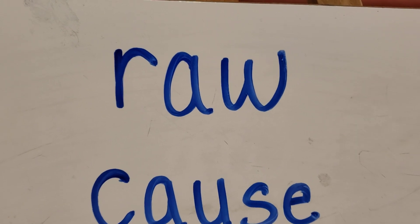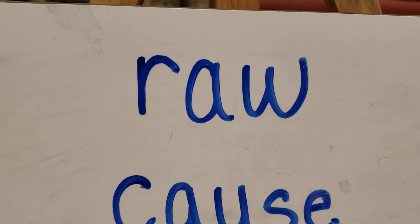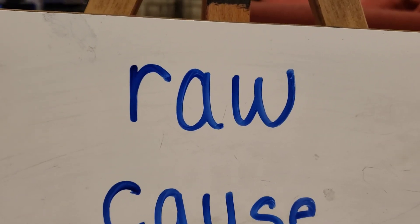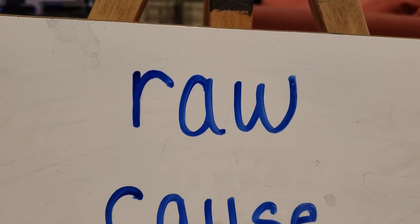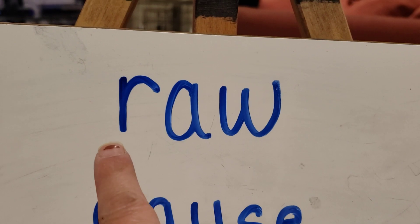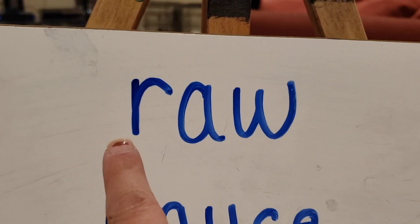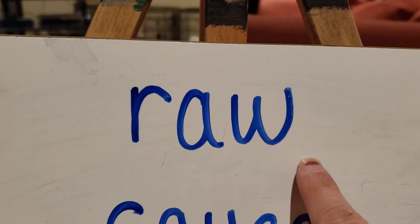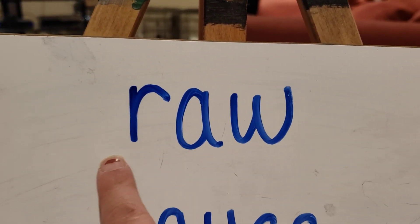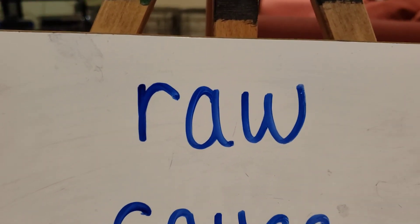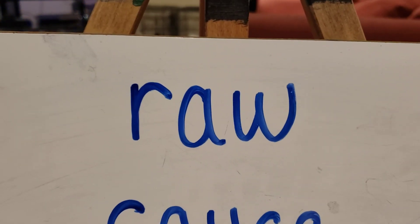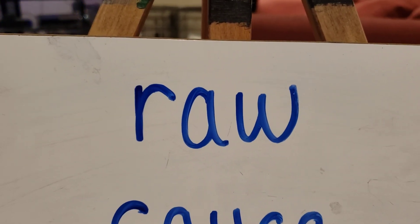The first word we're going to practice that sound with is the word RAW. Say it with me: R-R-AW, RAW. In this word, the A-W makes the AW sound.